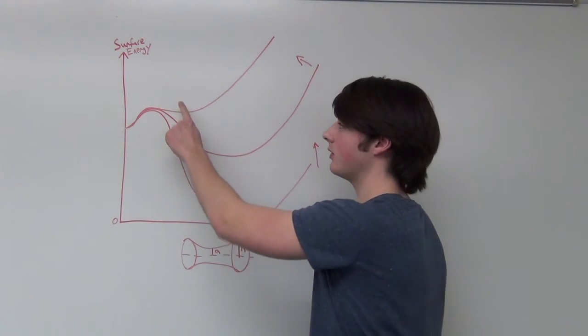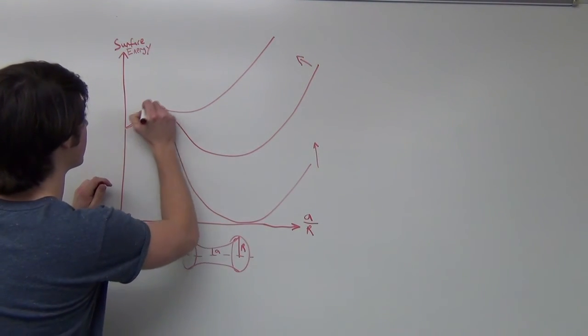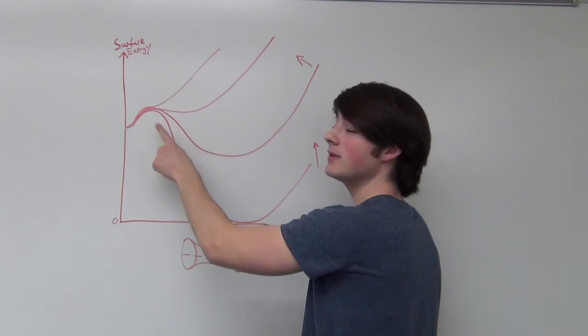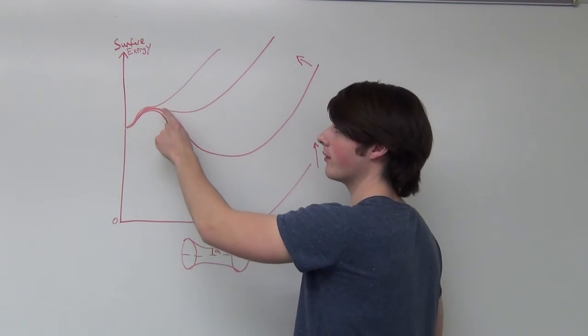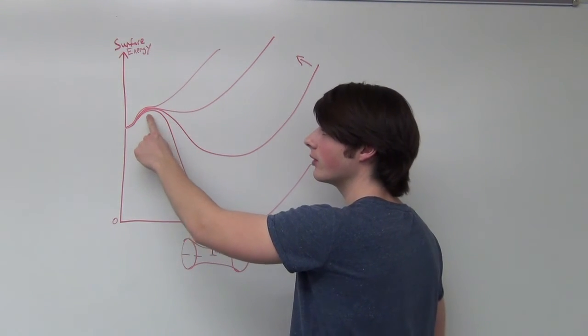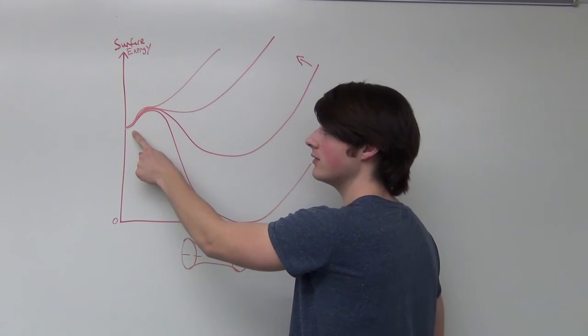As this graph increases even more to look like this, this is the point at which the catenoid will go from the wide neck solution through the narrow neck solution down to the two films.